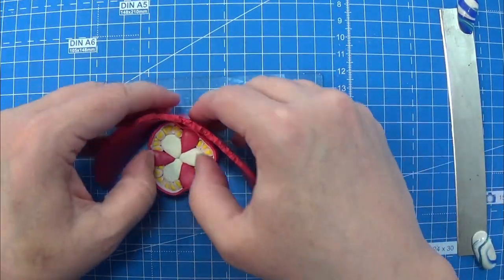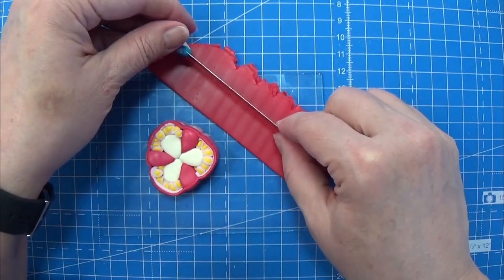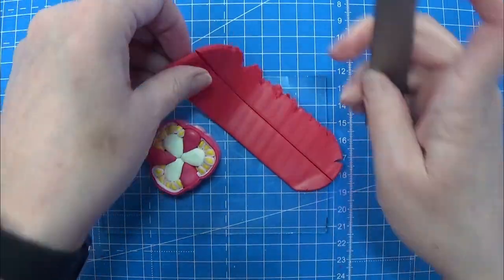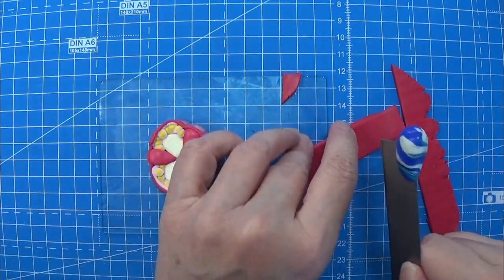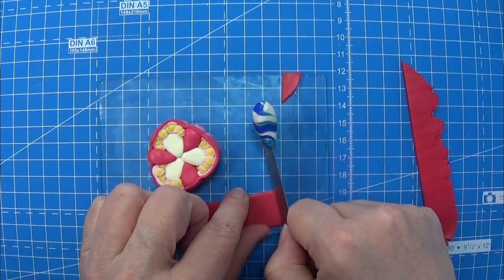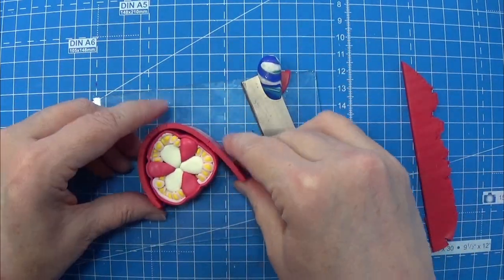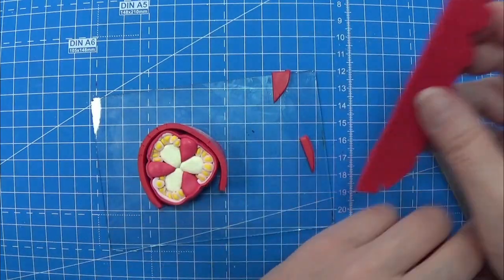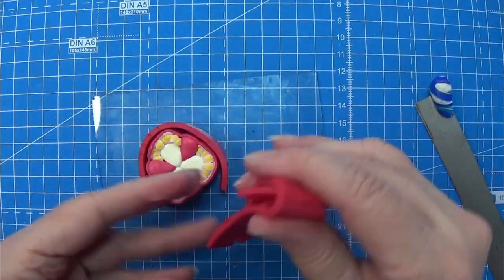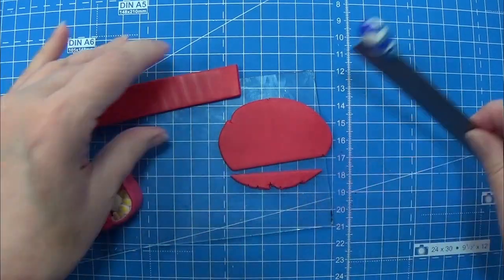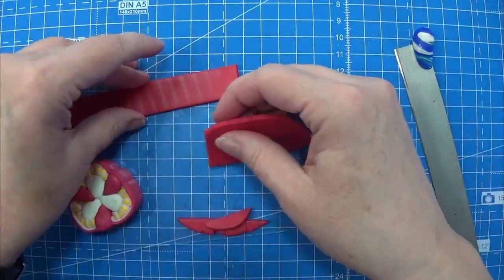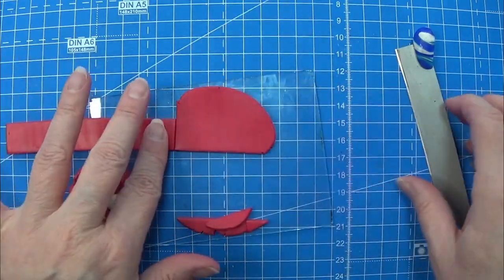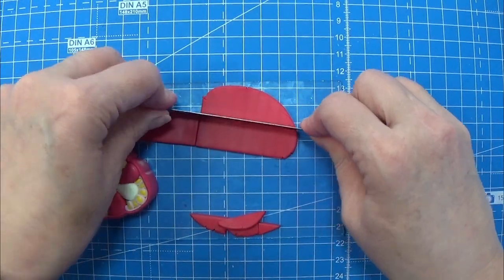Now the red clay—this is just red, there's nothing else in this. I rolled it out on the thickest setting on my pasta machine, that was one. Again I'm making a ribbon that will go all the way around the tomato. I had a little too little here, so I'm just making an extra piece that will fit in so I can have it all the way around my tomato.